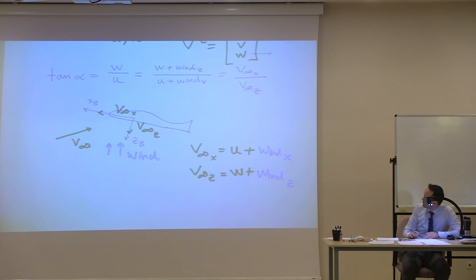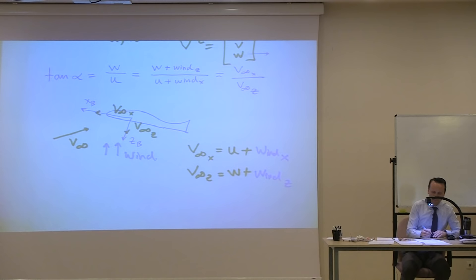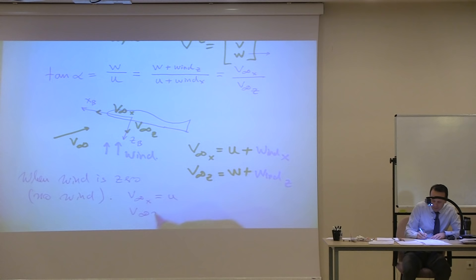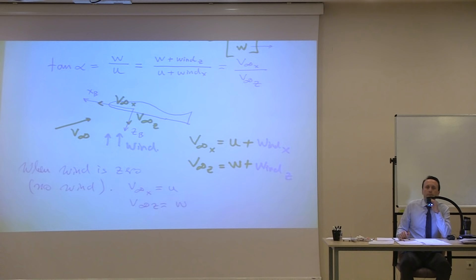Then you can properly compute alpha using these equations. When wind is zero — meaning no wind — V_infinity_X equals U and V_infinity_Z equals W, which recovers the original formula. We're talking about magnitudes here.